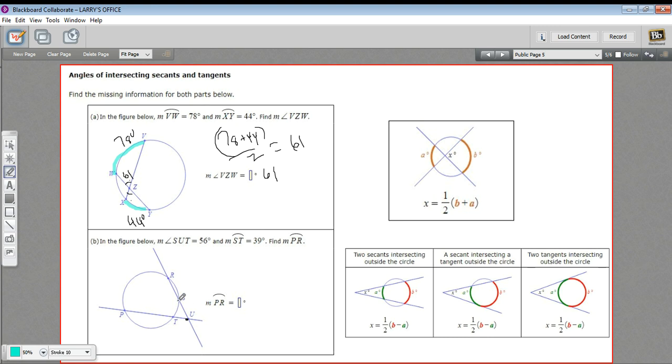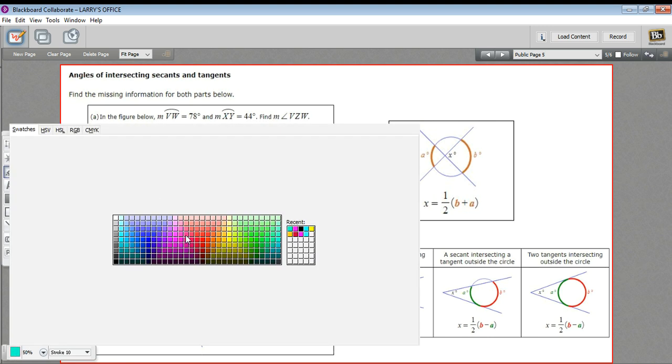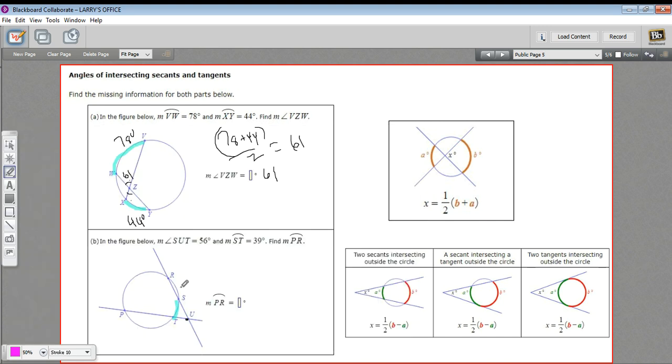There's this small arc right here that's caught inside the angle. And then there's a larger arc. Let me choose a different color for that. And the way this works is that you take the larger arc, you subtract the smaller arc, you multiply by one half, and that is going to give you the angle here where the two lines join.